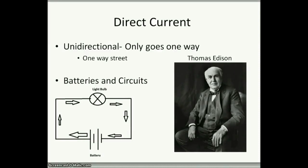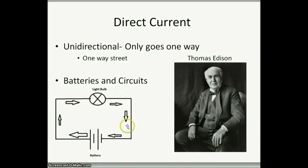The first one we're going to talk about is direct current. Direct current is what we call unidirectional — it only goes one way. It's a one-way road or one-way street. This is just like batteries and circuits, or anything with your remote controls, Xbox, PlayStation, anything like that. The electrons float through and keep cycling on this one path. One way, unidirectional.